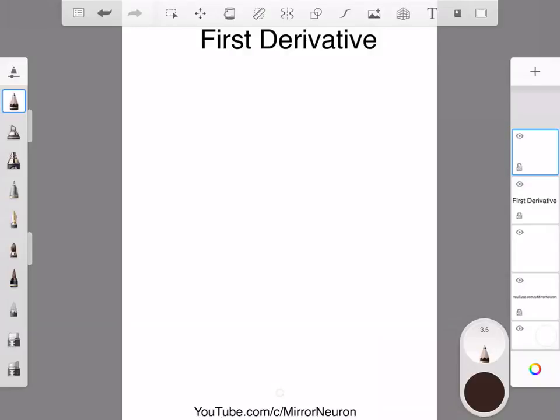Derivative in general terms means that if I move my independent variable by a certain amount, then how much impact it is going to do in my output variable. For example, if I draw a graph like this.